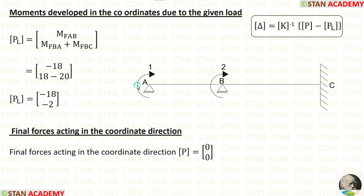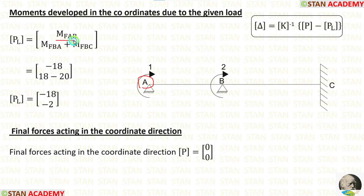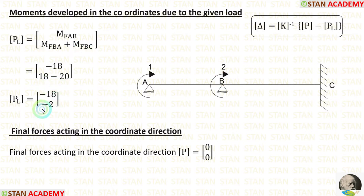There are two coordinates at points A and B. At point A the fixed end moment MAB is applied as the first value. At point B the two fixed end moments MBA and MBC are added together, giving minus 2. So inside the PL matrix we have two values, corresponding to the two coordinates.